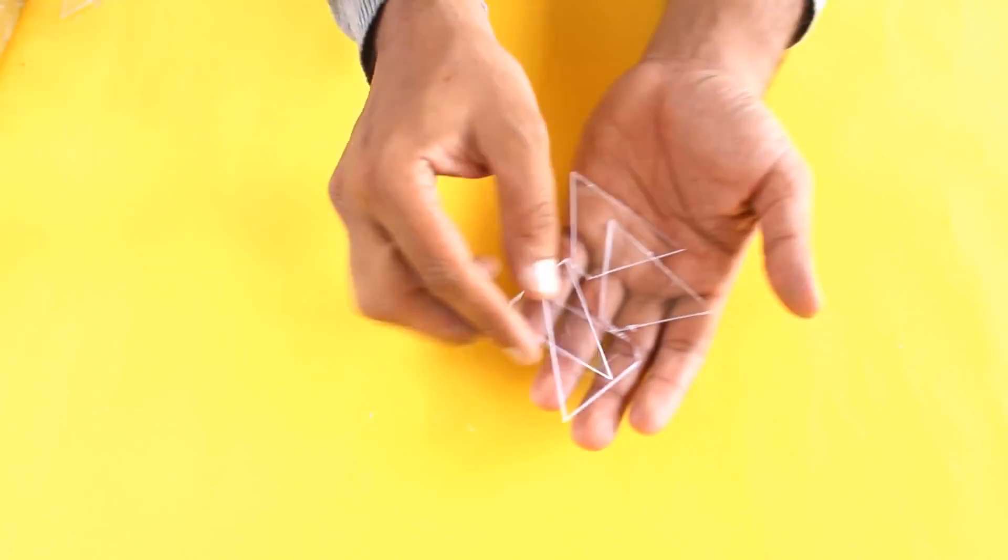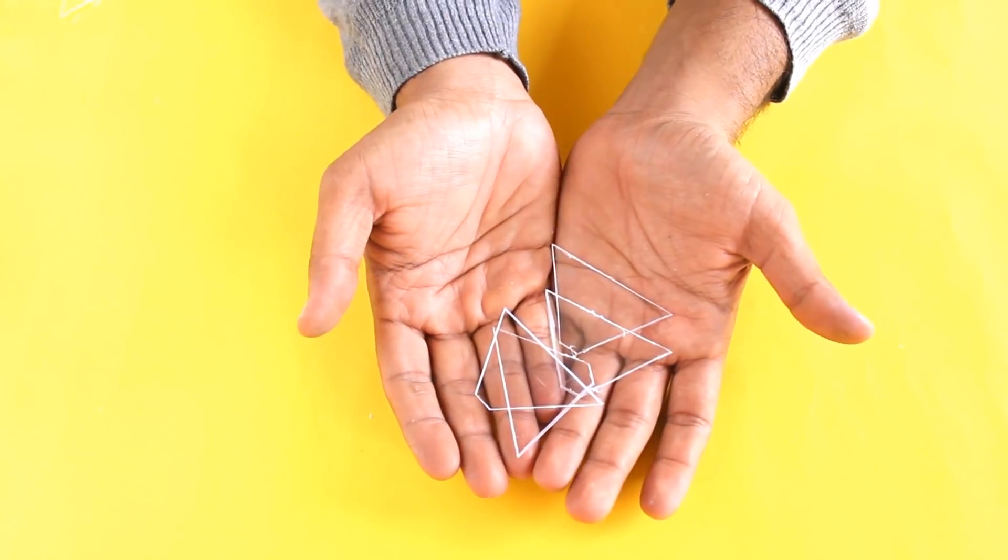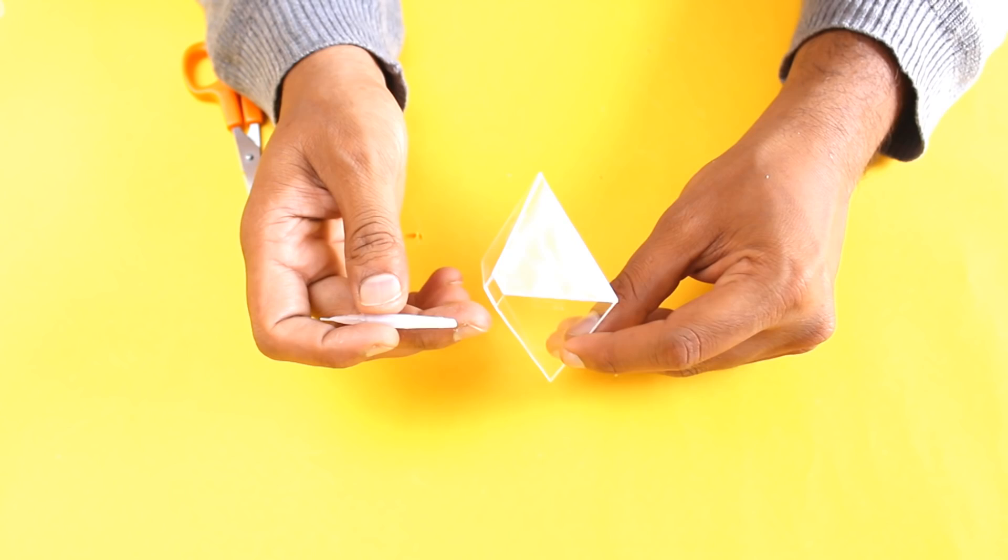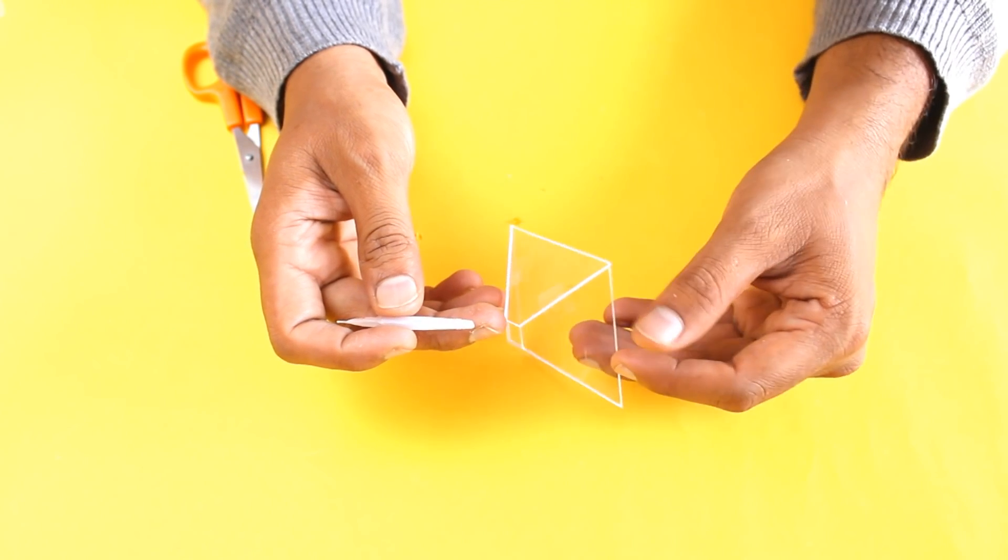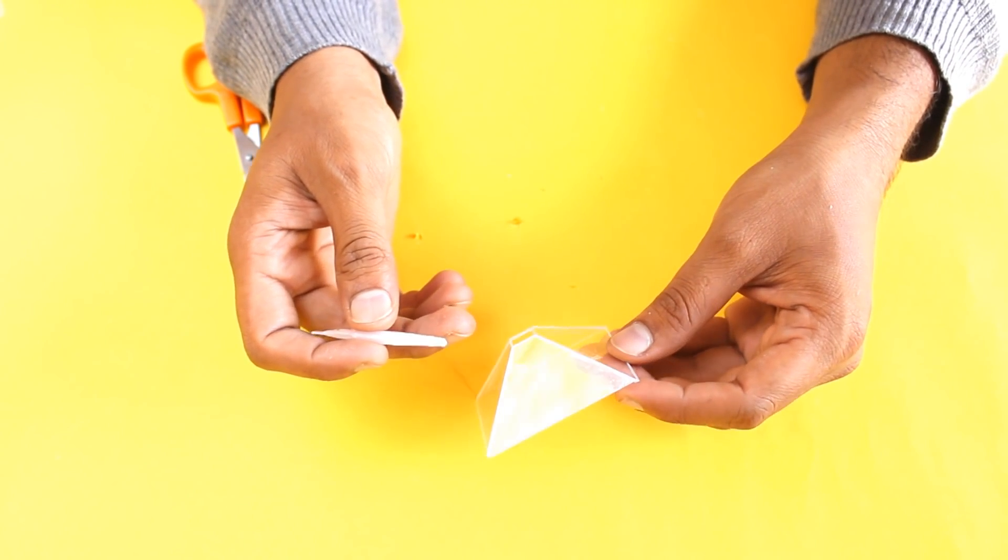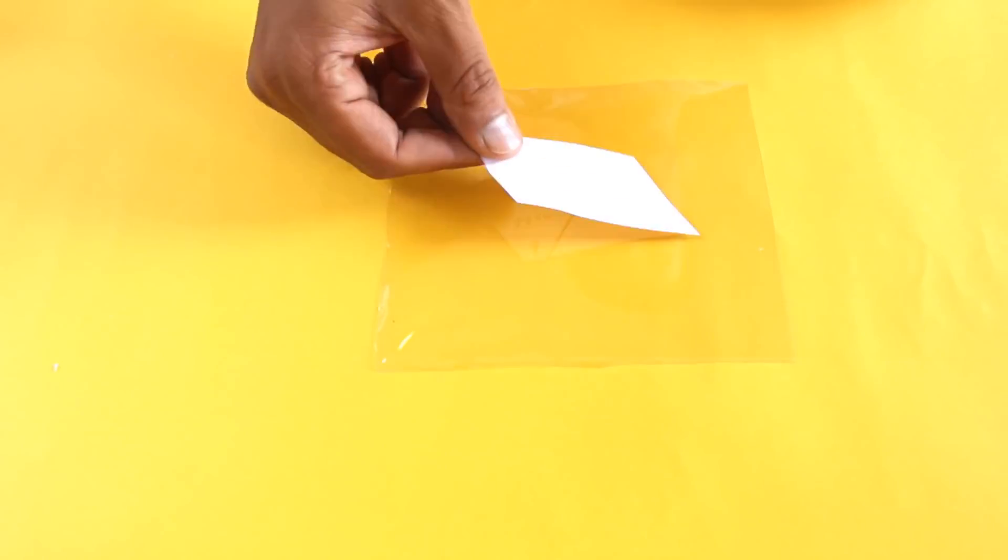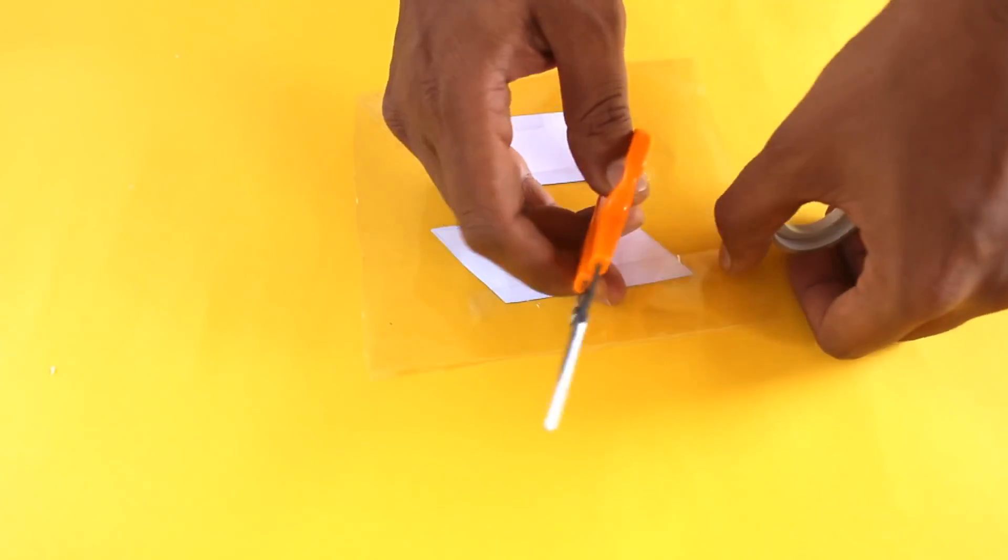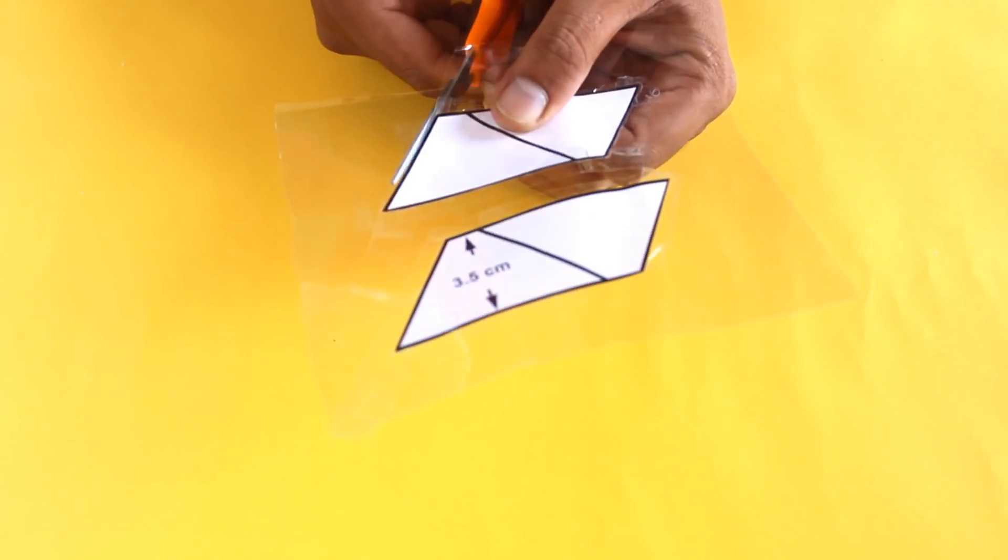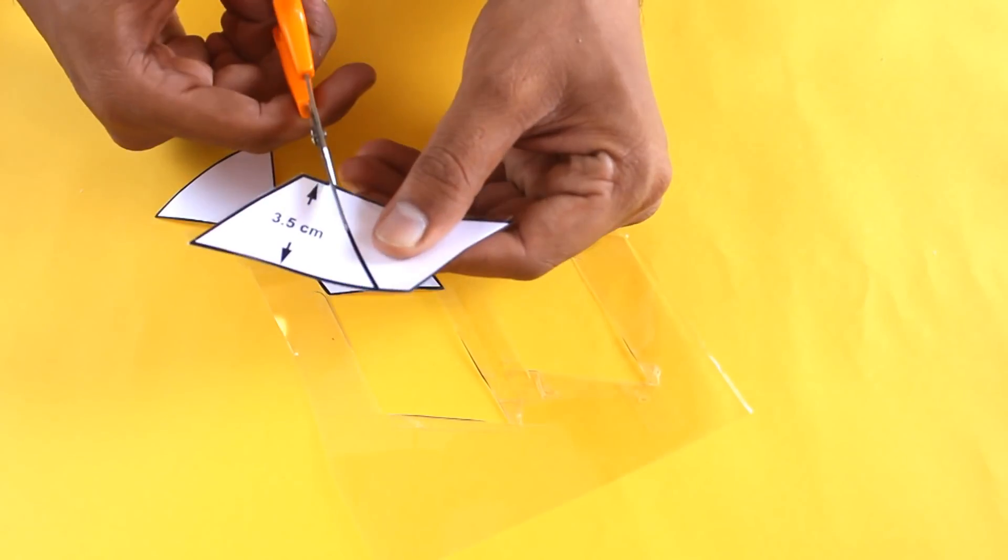We will get four identical pieces like this. In case of a plastic CD case, stick them in the shape of a pyramid with tape, apply glue, and leave it for proper adhesion. In case of a clear plastic sheet, do the same: paste the template, cut it, and stick them in the shape of a pyramid with tape.